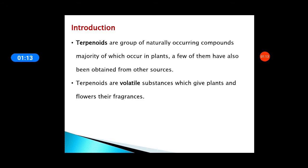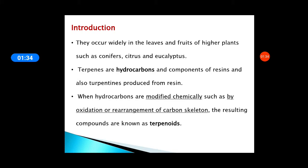These individual components of essential oils are called terpenes or terpenoids. Terpenoids are a group of naturally occurring compounds, the majority of which occur in plants, with only a few obtained from other sources. These are volatile substances and give plants and flowers their fragrances. They occur in the leaves, fruits of higher plants such as conifers, citrus, and eucalyptus.